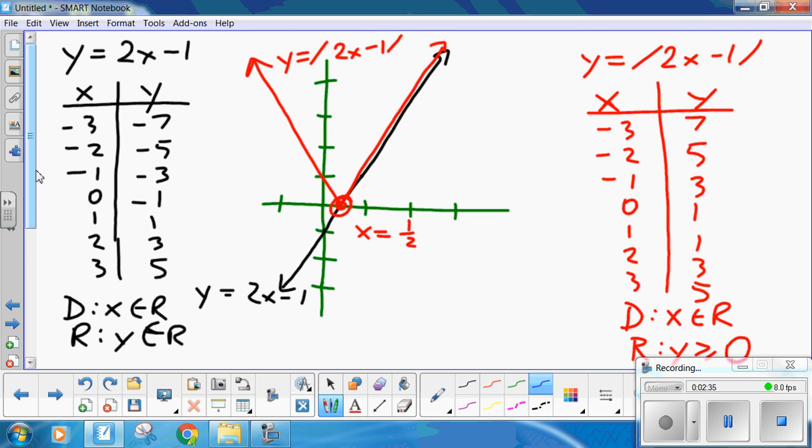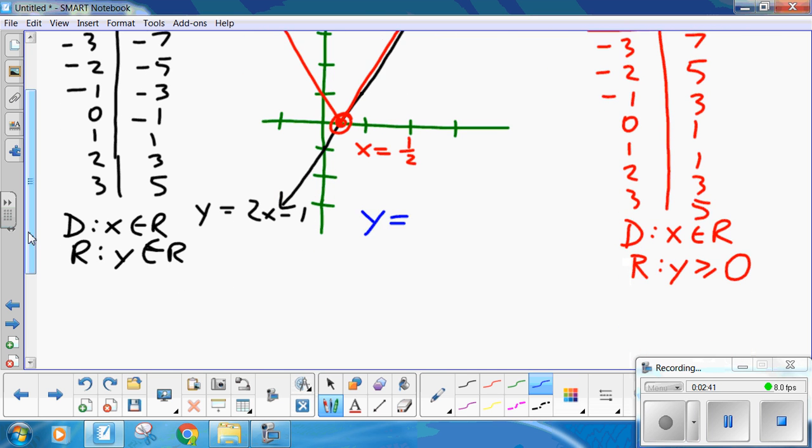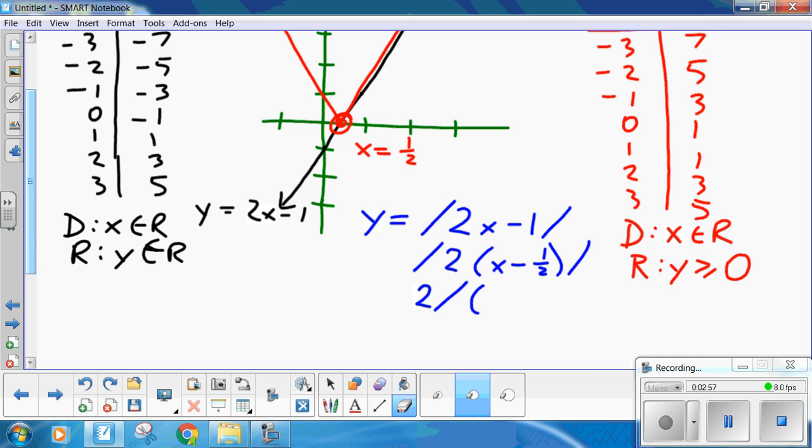Now, a few things to note here. y equals the absolute value of 2x minus 1. Now, if you wanted to, that's 2 times x minus 1 half, or 2. You know, we don't need a double set of brackets. x minus 1 half.